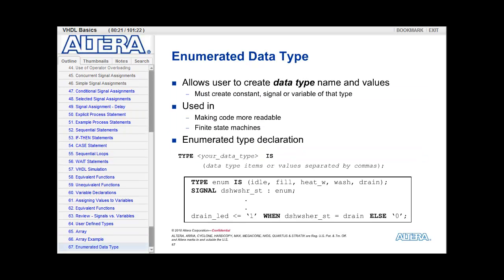And lastly, the enumerated data type allows you to create your own data type name and values. Like the array data type, you are creating a brand new data type. So you must, after creating it, you must also create a constant, a signal, or a variable that is of that type. We use enumerated data types in VHDL and state machines. They can be synthesized into state machines and we also use it just to make code more readable sometimes.